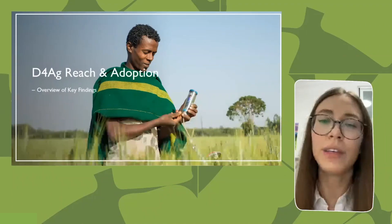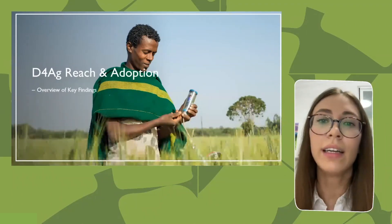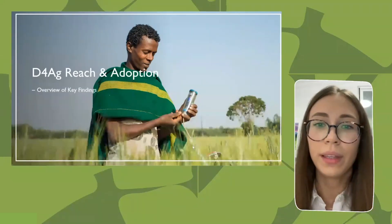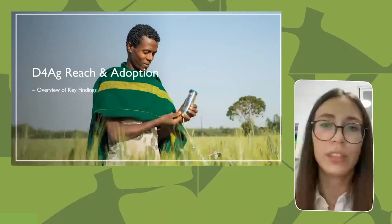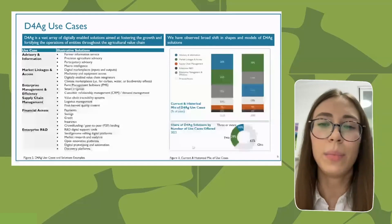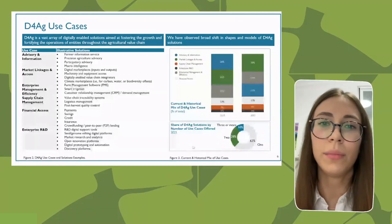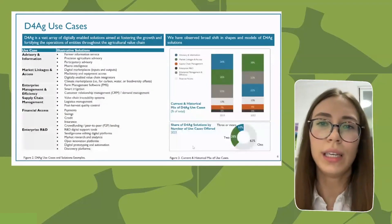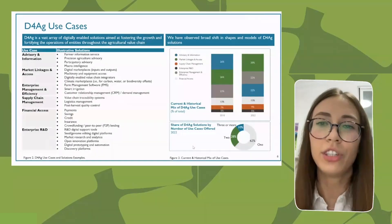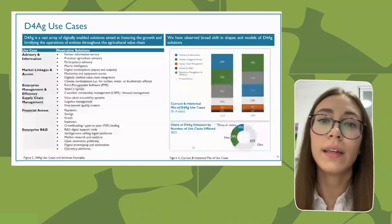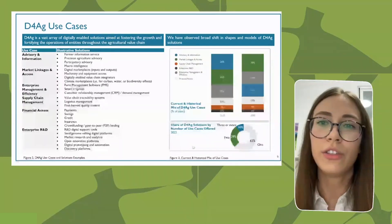Today we'll highlight just a few key findings that sketch the current landscape of the digital ag sector. Before we proceed, let's set some common ground. Digital ag is a vast array of digitally enabled solutions aiming to foster the growth and fortify the operations of entities throughout the whole ag value chain. Our report identified six key use cases: advisory information, market linkages and access, enterprise management and efficiency, supply chain management, financial access tools, and enterprise research and development.